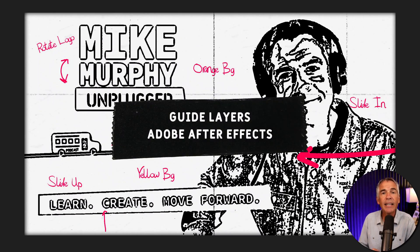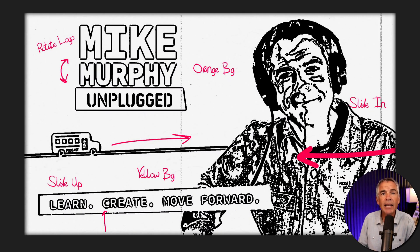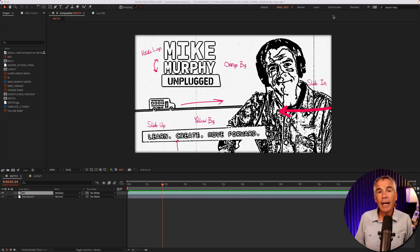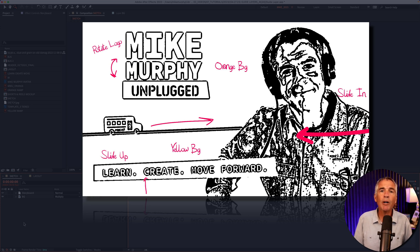A guide layer is a non-rendering layer, meaning when you export your After Effects projects, any layers that you have as guide layers will not export. You can make any layer or pre-comp a guide layer and you can have as many guide layers as you want, which can be really helpful if you're trying to mock up an animation and you just want to make sure you have the position perfectly over your layout.